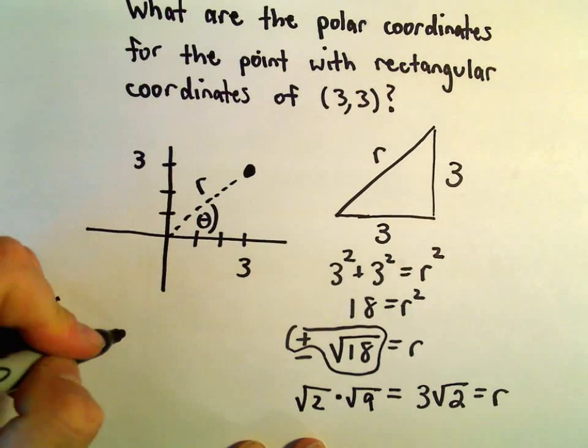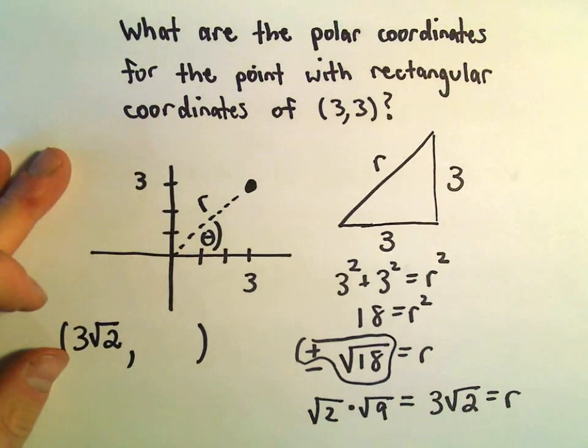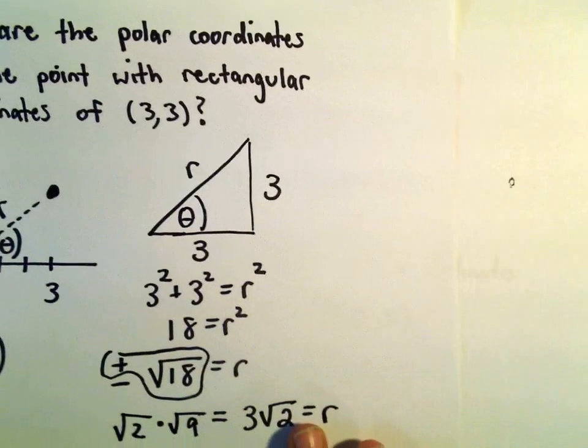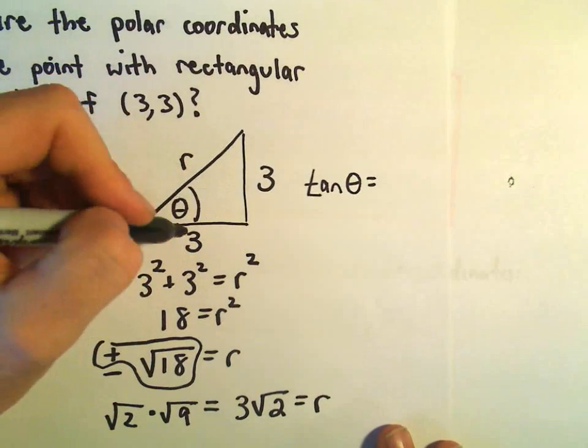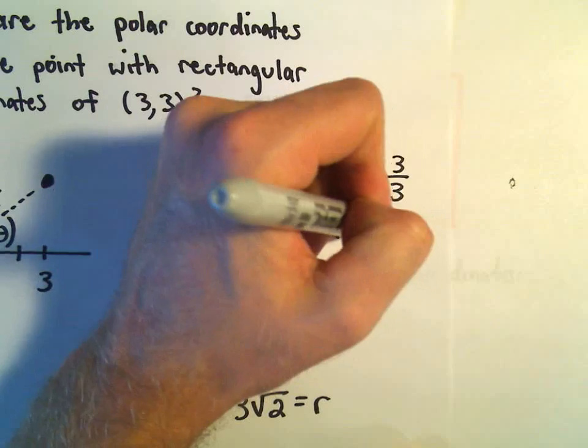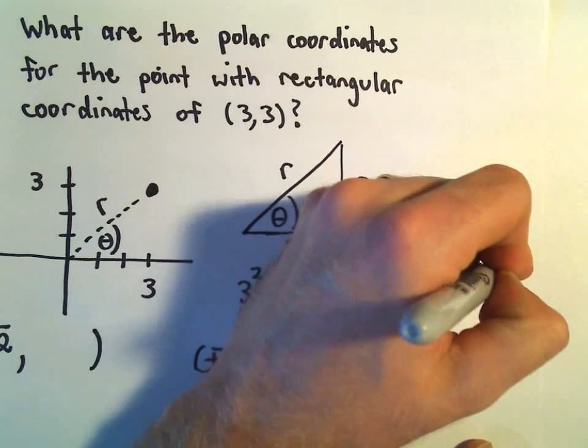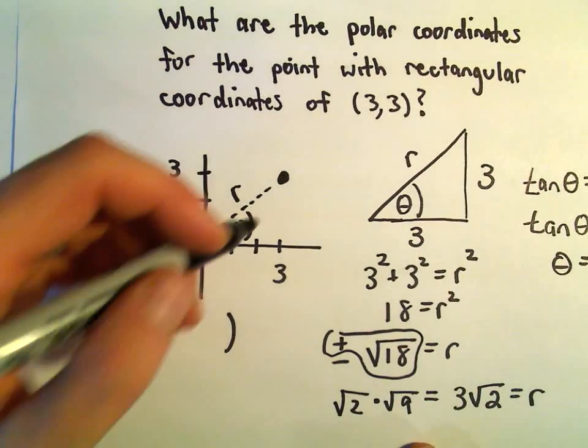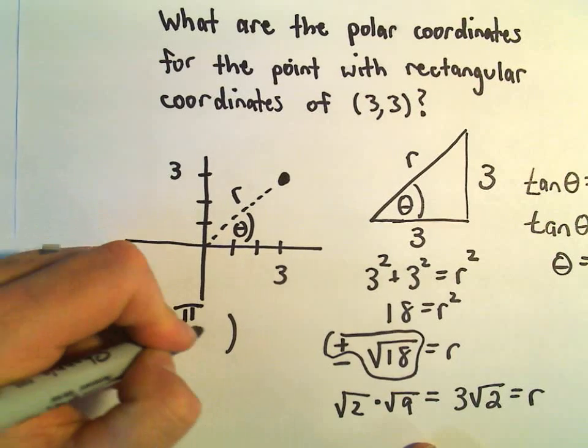So again, we write r and then we write theta. So our r would be 3 root 2. To figure out this angle theta, well, we can just use tangent. So tangent of theta would be the opposite over the adjacent, so 3 over 3. So that's just going to give us tangent of theta equals 1. Well, we're sitting here in quadrant 1. This is definitely going to be theta equals pi over 4, or 45 degrees. So one way to describe this point would be to use the polar coordinates 3 root 2, comma, pi over 4.